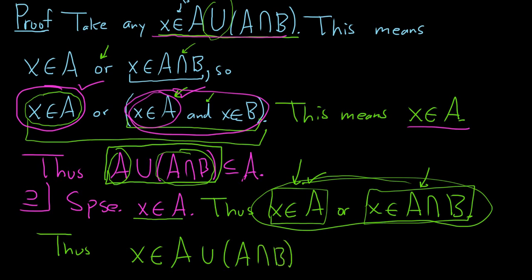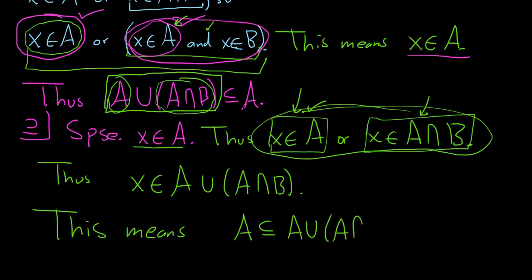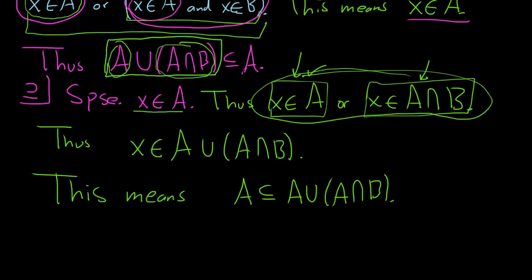So you have to know what it means for an OR statement to be true — that's the key. We started with X in A and showed that it's in the union. This means A is a subset of A union (A intersection B). We showed both sets are subsets of each other; therefore, they must be equal.